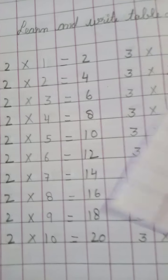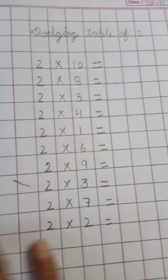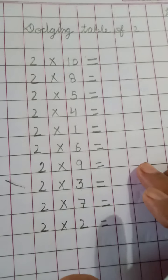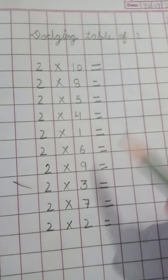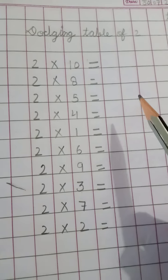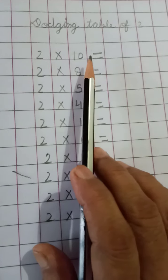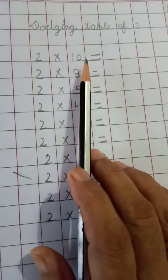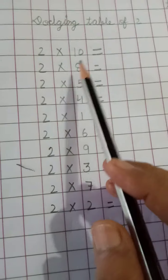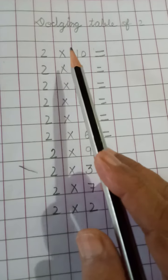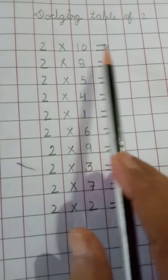Today I will teach you the dodging table. Look at here — this is the dodging table. Dodging table means you give the answer randomly, not in order — beat beat me se dena, beat beat me se likhna. For example: 2 tens are 20.